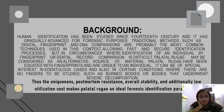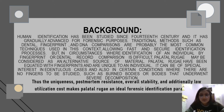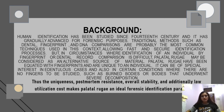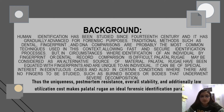Human identification has been studied since the 14th century and has gradually advanced for forensic purposes. Traditional methods such as dental, fingerprint, and DNA comparisons are the most commonly used techniques, allowing fast and secure identification processes. But in circumstances where identification by fingerprint or dental record comparison is difficult, palatal rugae — also known as palatal rugoscopy or palatoscopy — may be considered as an alternative source of material.